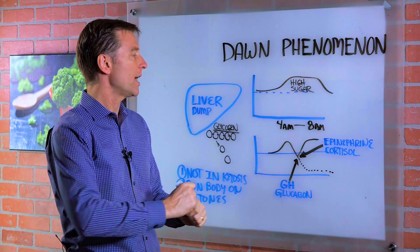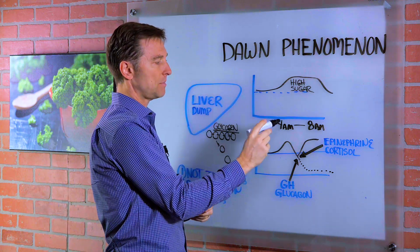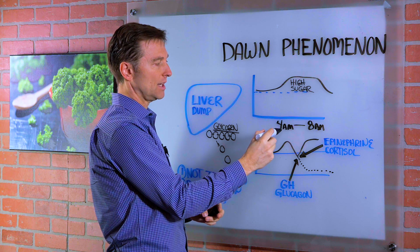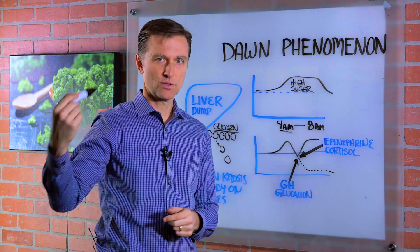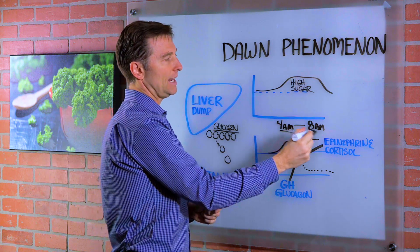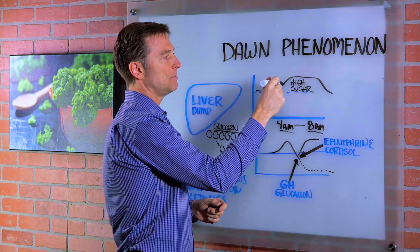This is a situation where you have a spike in blood sugars between like 4 a.m., sometimes it's a little earlier, to 8 a.m. in the morning, so that blood sugars spike.